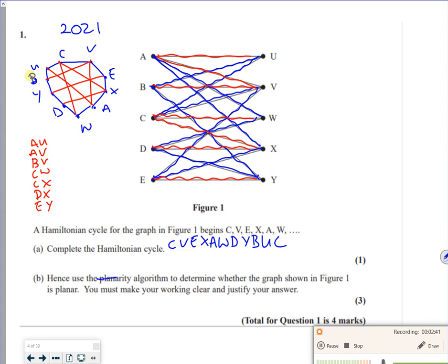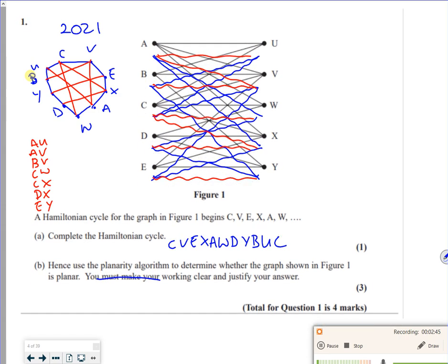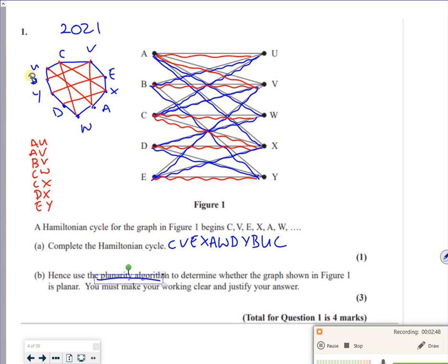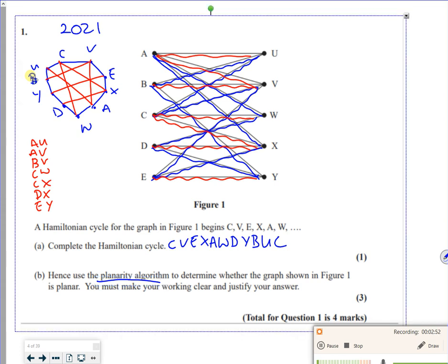So it says, hence use the planarity algorithm to determine whether the graph is planar or not. So you're trying to see if you can get this as no overlap. So let's start with A, U. Make sure you're working and justify the answer. So I'm going to set A, U as inner.